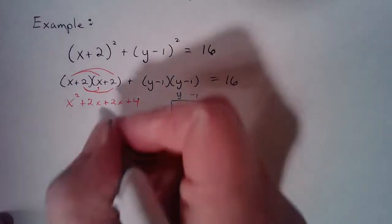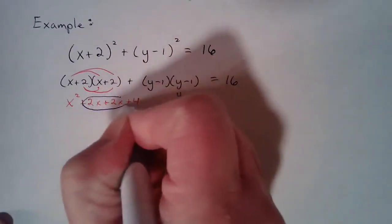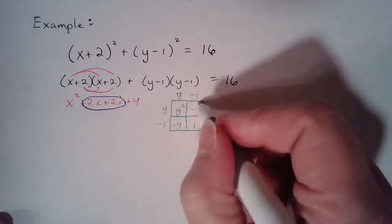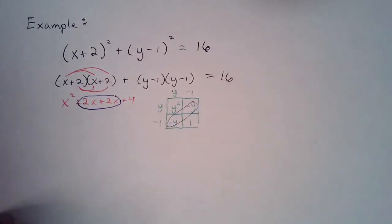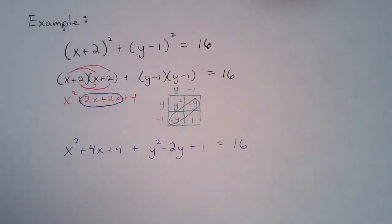Alright, so now we're going to combine our like terms. So I've got 2x and 2x, and I've got the negative y and the negative y to combine. Alright, so now that we take a look at this, we've combined our like terms. So now we're going to rearrange them and move this 16 over to the other side so that it's equal to zero.